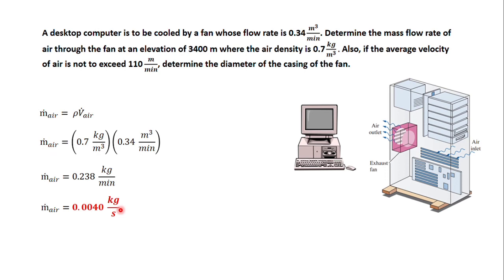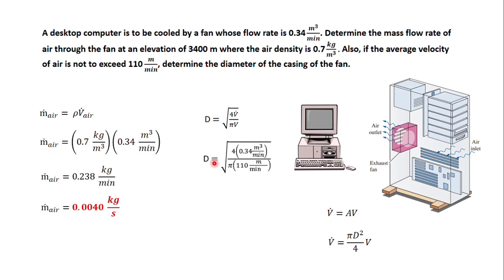If the mean velocity is 110 meter per minute, the diameter of the casing is found using d equals the square root of 4 times the volumetric flow rate divided by pi multiplied by velocity. This formula is derived from the volumetric flow rate equals area times velocity, where the area for a circular cross-section is pi d squared over 4. Plugging in the values: diameter equals the square root of 4 times 0.34 cubic meter per minute divided by pi times 110 meter per minute, giving a diameter of 0.063 meter.